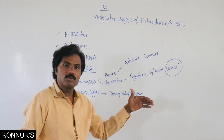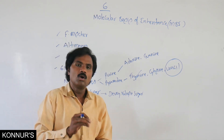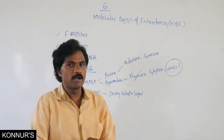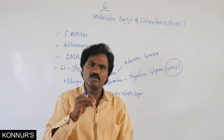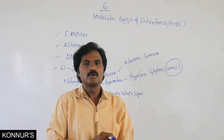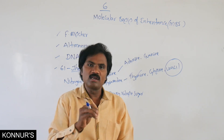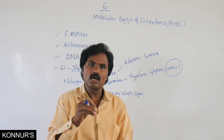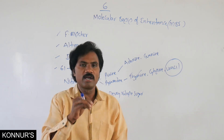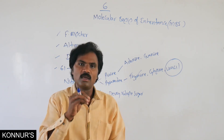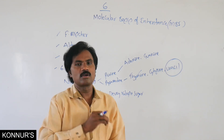DNA acts as the genetic material in most organisms. Who were the scientists who first identified DNA as the genetic material? In 1944, Macleod, McCarty, and Avery — these three scientists identified and proved that DNA is the genetic material present in most organisms.